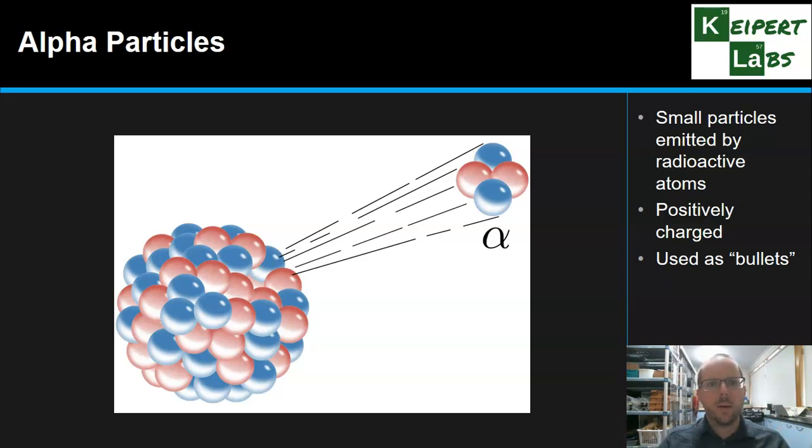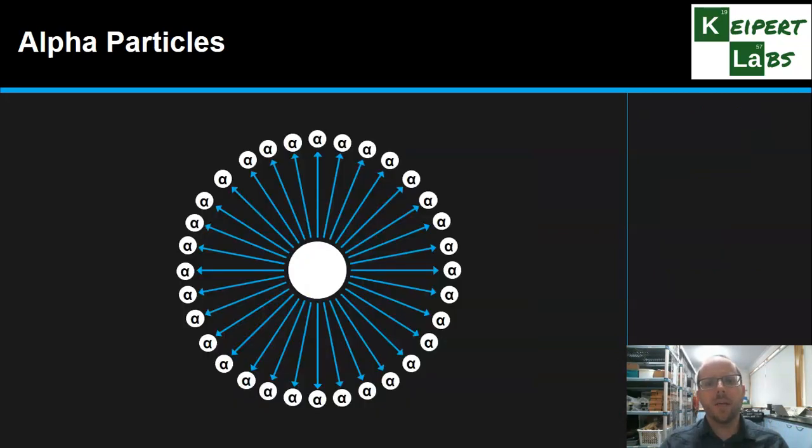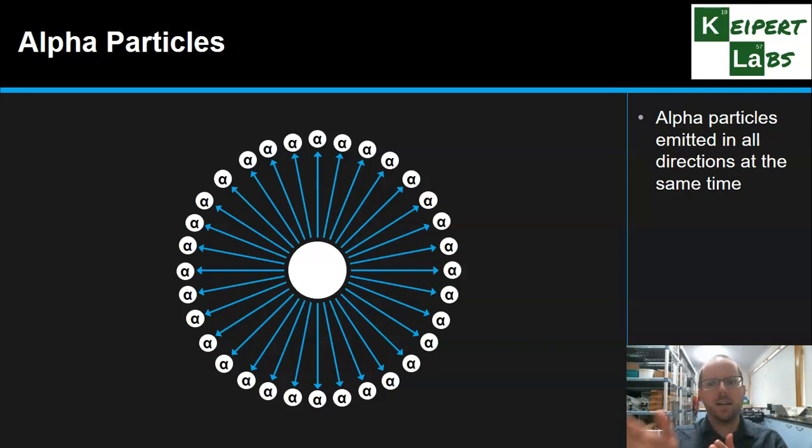The reason they could be used as these projectiles, they had to do it in a certain way. Imagine this white circle in the middle is a radioactive atom. Alpha particles are emitted by these radioactive atoms in all directions at the same time. They're not just emitted like a bullet out of a gun in a straight line - they're given off in all directions. There's no pattern or control to it.